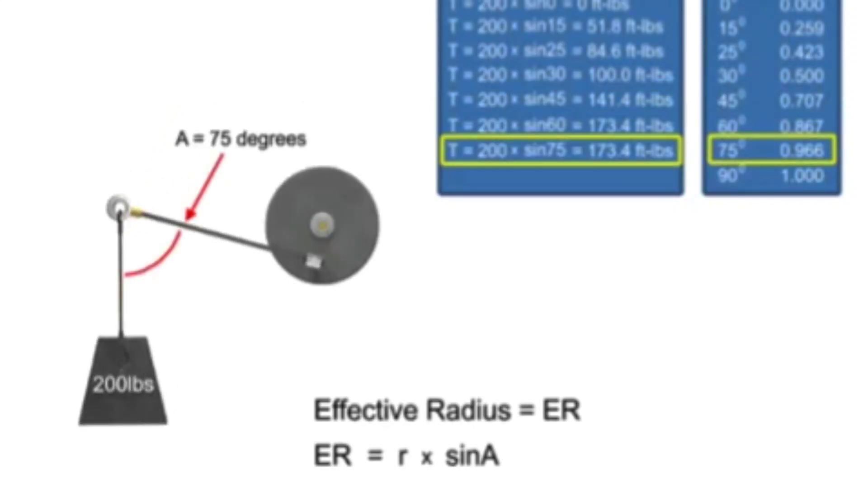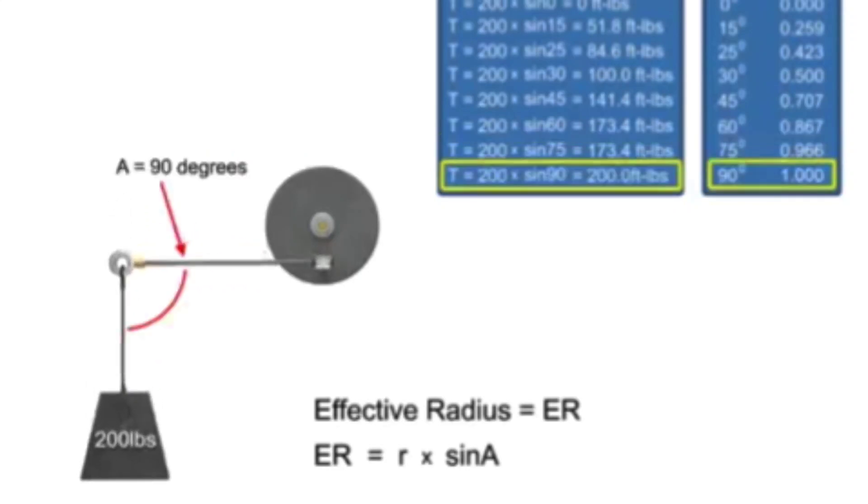When the lever arm is at right angles to the force of the weight, the angle is equal to 90 degrees. The sine of 90 degrees is equal to 1. It is at this angle that the torque is at its maximum value for the system.